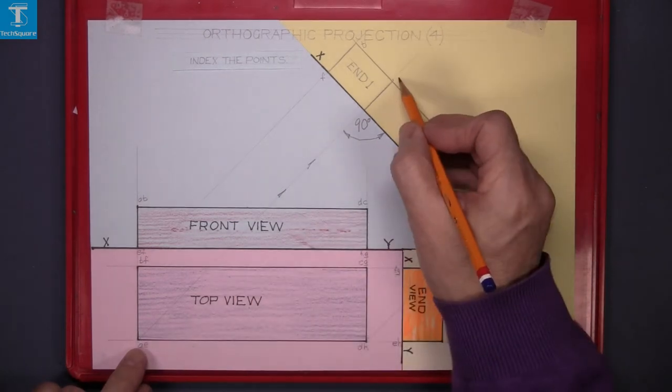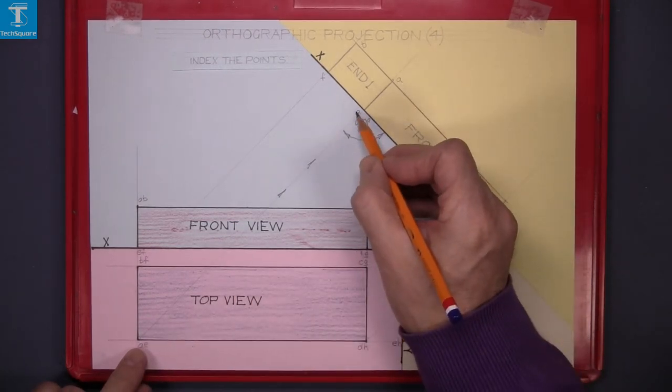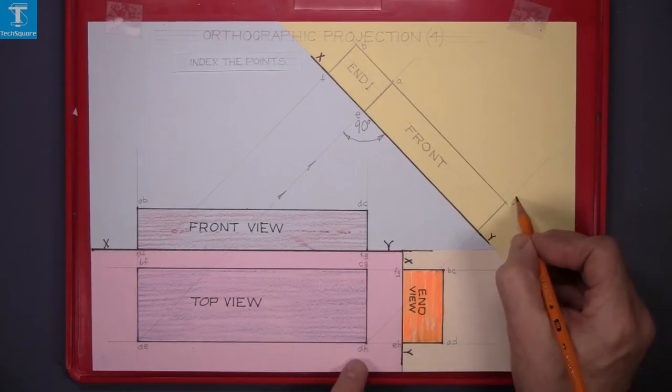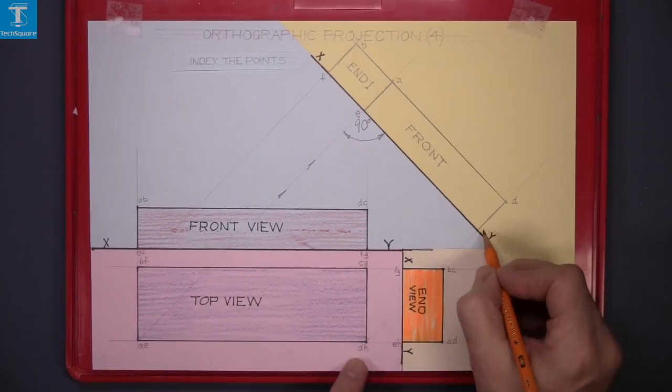This one here is A at the top and E is the bottom, and again, single line. This one here, D is the top and H is the bottom.